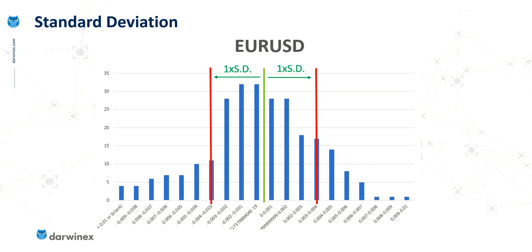Value at risk does assume that we have a normal distribution, which won't always be the case for price data. However, it's usually sufficient in order to provide us with a fairly good estimate of what that value at risk is.